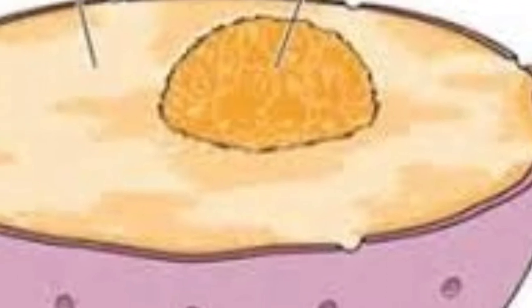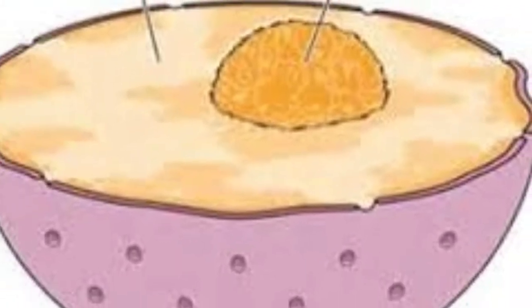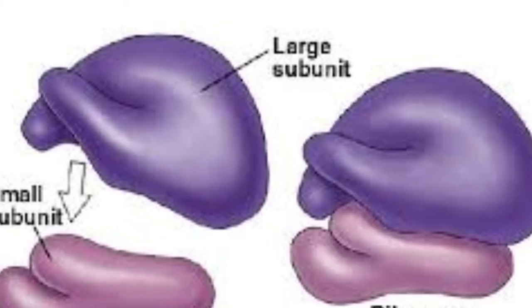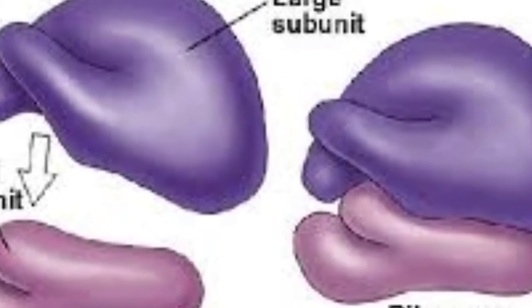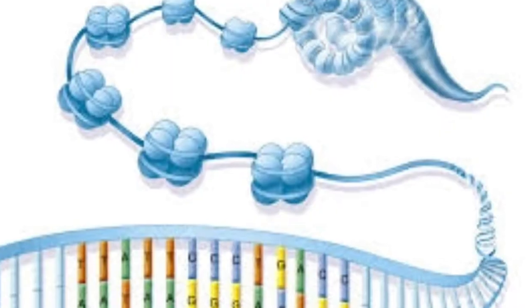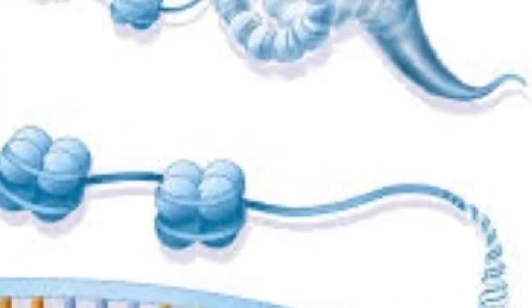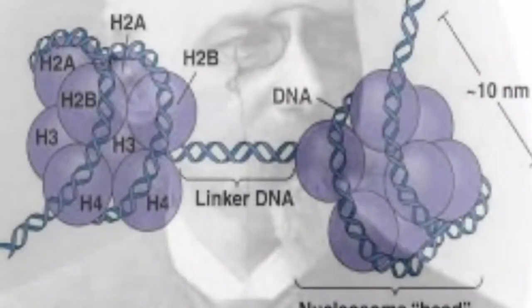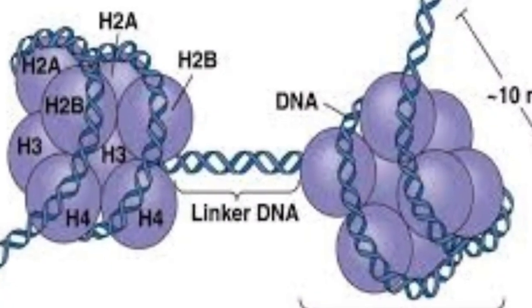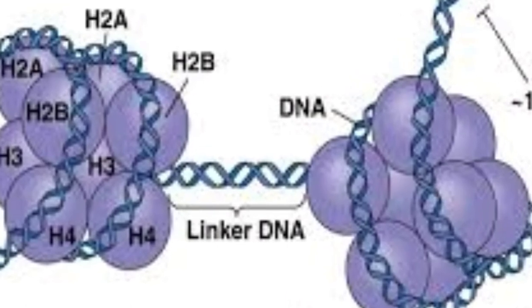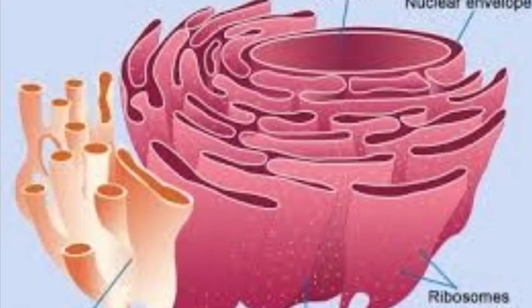Nucleolus is one of the cell organelles present in the nucleus. It was discovered by Donald Brown in 1964, and it helps in the production of ribosomes. Chromatin material is present inside the nucleus; Walter Fleming discovered it in 1878. Chromatin contains DNA and histone proteins.